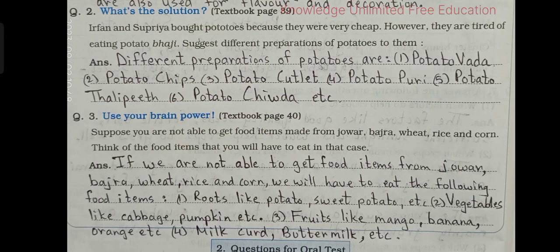Question two — What's the solution? Irfan and Supriya bought potatoes because they were very cheap. However, they are tired of eating potato bhaji. Suggest different preparations of potatoes to them. Answer: different preparations of potatoes are potato vada, potato chips, potato cutlet, potato puri, potato thalipeeth, potato chivda, etc.